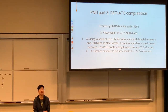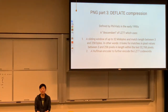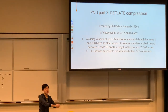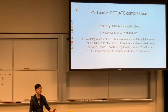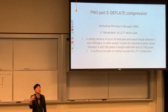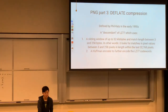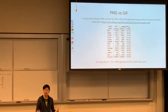Part three of PNG is the actual Deflate compressor, defined by Deutsch in the early 1990s. It's a descendant of LZ77. Specifically, Deflate uses a sliding window of up to 32 kilobytes and a match length between 3 and 258 bytes — these parameters define what makes Deflate unique. It looks for matches in pixel values between 3 and 258 bytes in length within the last 32,000-ish pixels. After that, it uses a Huffman encoder to code all the LZ77 output.